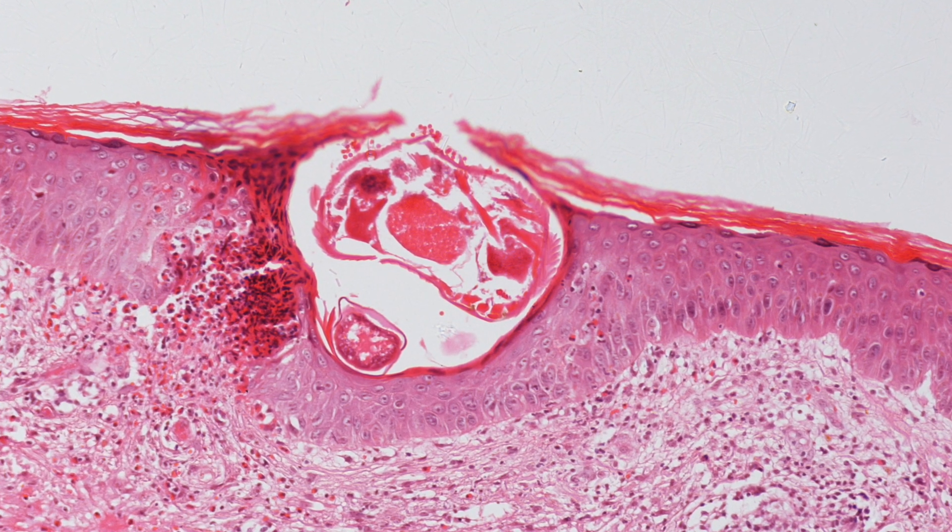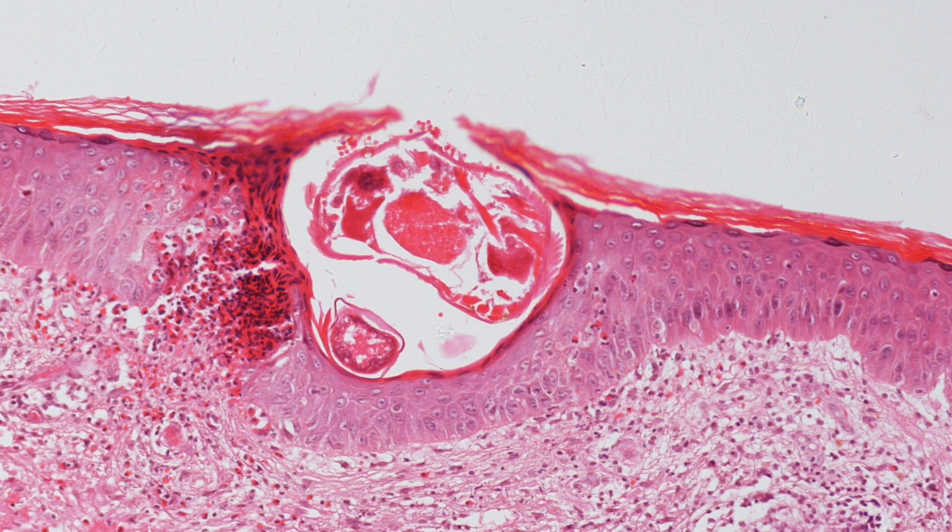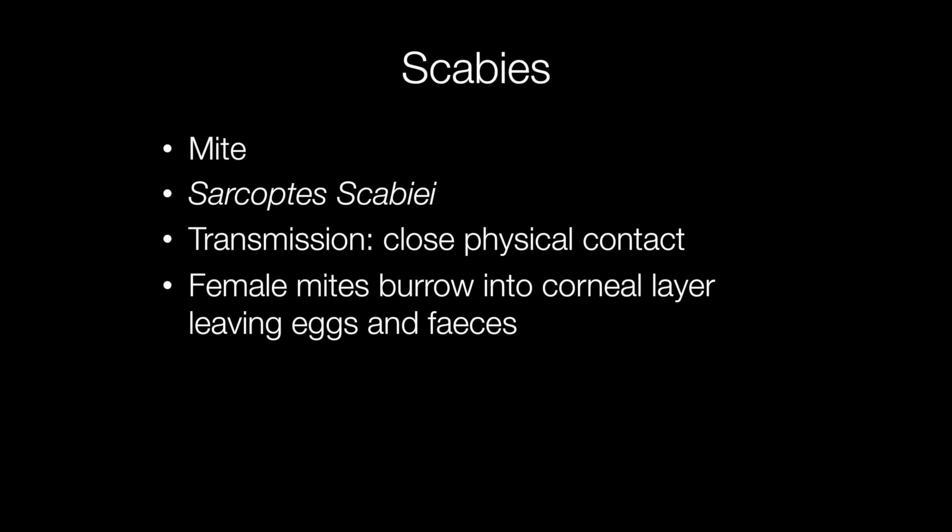This is the histological appearance of scabies. Scabies is caused by infestation by a mite called Sarcoptes scabiae. Transmission is caused by close physical contact, and the female mite burrows into the corneal layer of the skin, leaving eggs and faeces on its way through the tunnel.